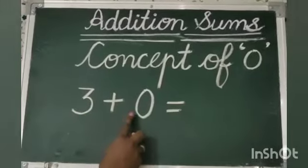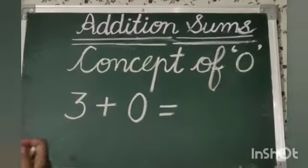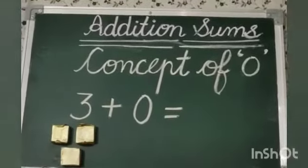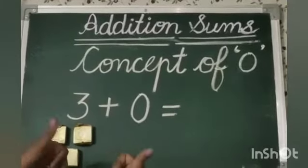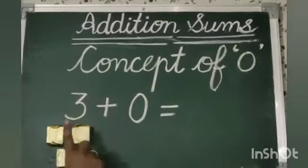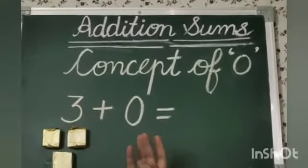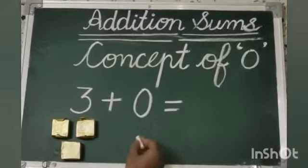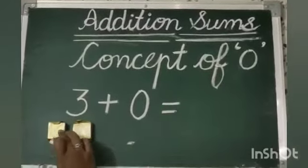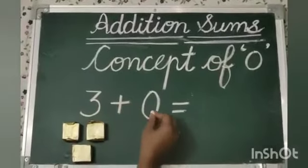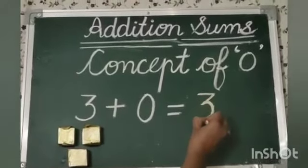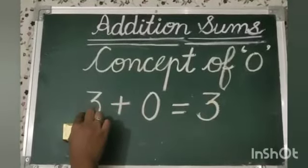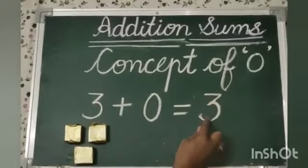Let's take one example. Three plus zero is equal to what? I have three berries. Now I have no berry. If we add these two numbers together, what will be the answer? Let's count: one, two, three. Zero means no number, so one, two, three — three plus zero is equal to three. When we add zero in any number, the same number will be the answer.